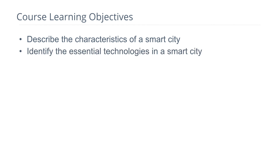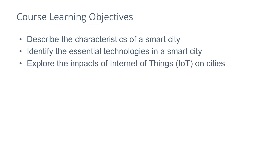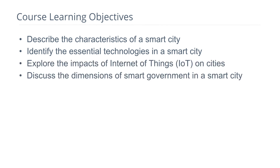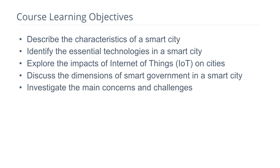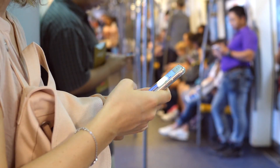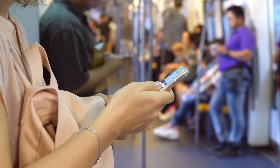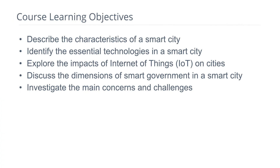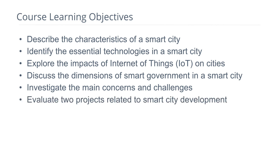We will go over some essential technologies in smart cities and explore the impacts of Internet of Things, and discuss dimensions of smart governments in a city. Like any other planning effort, the implementation of smart projects is aligned with a number of concerns and challenges, from privacy and security to livability and social justice.